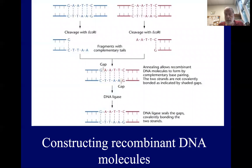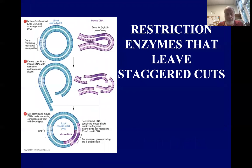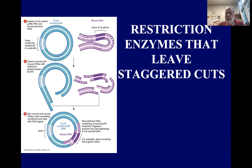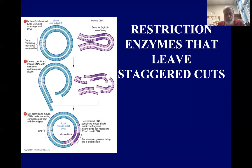We cut DNA from two sources with the same restriction enzyme — in this case EcoR1 — leaving complementary tails. We mix them together and, at a slightly lower temperature, they naturally anneal. Then DNA ligase fills the gaps and we have a recombinant DNA molecule. Here we've cut the gene for beta globin in mice out of native DNA, cut open the cosmid PJB8 with the same restriction enzyme, mixed them together with DNA ligase, and now we have a recombinant plasmid with our mouse gene in it.